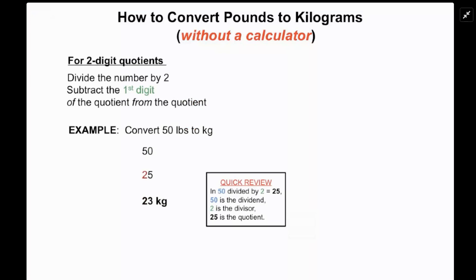As a quick review: in the example we just did, the number 50 divided by two equals 25. 50 is the dividend, two is the divisor, and 25 is the quotient.